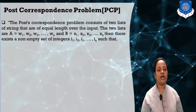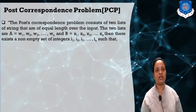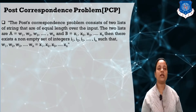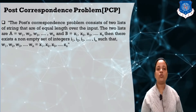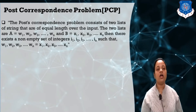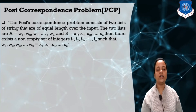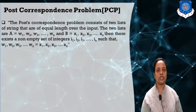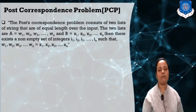We define that there exists a non-empty set of integers like i1, i2, i3 up to n such that w_i1, w_i2, w_i3 up to w_in is equal to x_i1, x_i2, x_i3 up to x_in. So we have to find out the solution — a non-empty set of integers i1, i2, i3 such that the concatenated top strings equal the concatenated bottom strings.